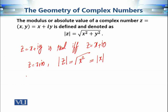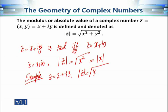As an example, if z equals 2 plus i·3, then the modulus of z is the square root of 2 squared plus 3 squared, which equals the square root of 13.